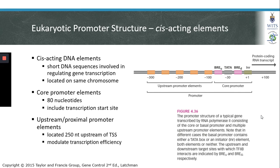Now that we understand how transcription factors bind to a promoter to initiate transcription, we will look at how genes are structured to facilitate this binding. A gene promoter contains a number of cis-acting DNA elements — short DNA sequences involved in regulating transcription that are located on the same chromosome. The core promoter elements are those bound by RNA polymerase 2 and its associated transcription factors, located approximately 80 nucleotides upstream of the transcription start site, and also include the transcription start site itself.